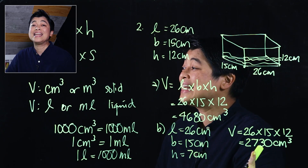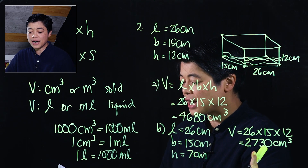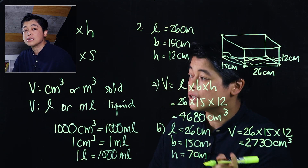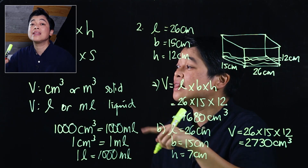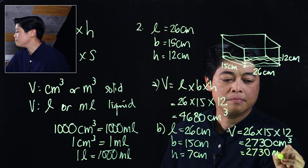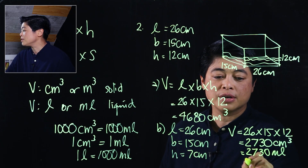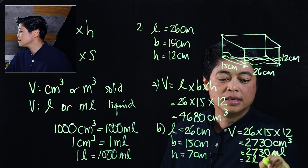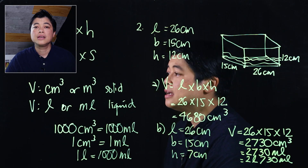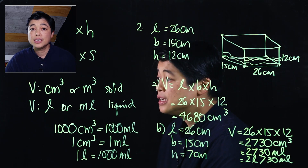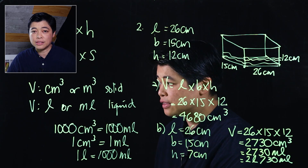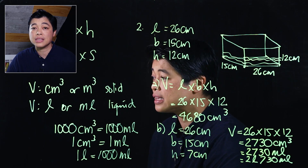Since this is liquid, we need to express it in milliliters. The problem says to write the answer in liters and milliliters, so 2,730 cm³ equals 2,730 milliliters, which is also equal to 2 liters and 730 milliliters — since 1 liter has 1,000 milliliters.